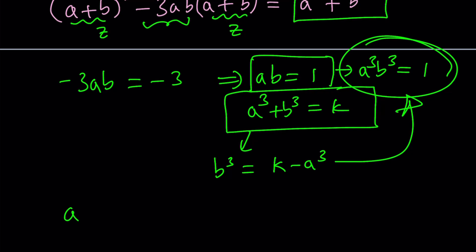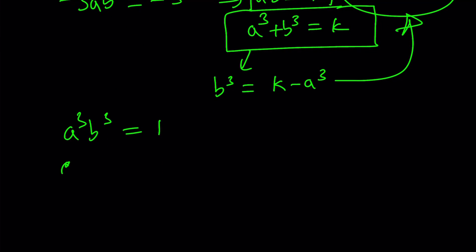So a cubed, b cubed equals 1. Now, let's go ahead and replace b cubed with k minus a cubed. Remember, k is a constant for now. And then distribute and put everything on the right-hand side. You're going to get a to the sixth power minus k a cubed plus 1 is equal to 0.